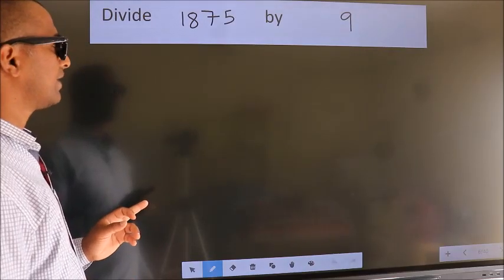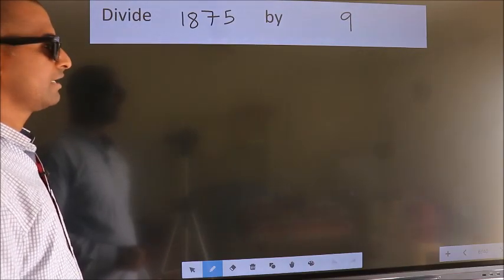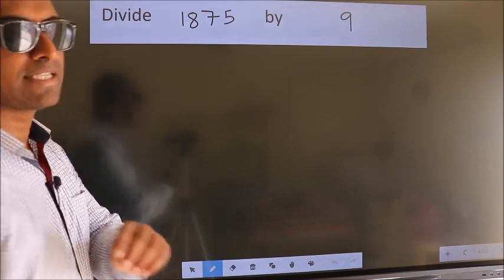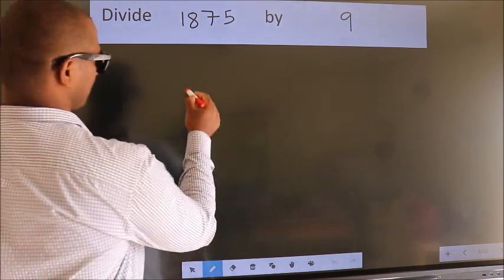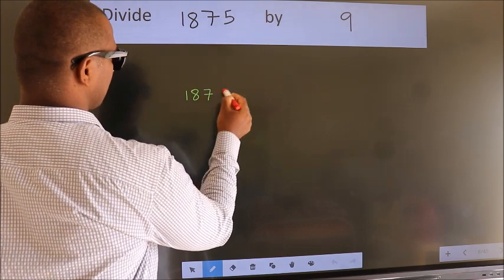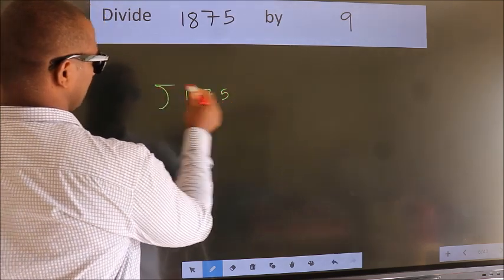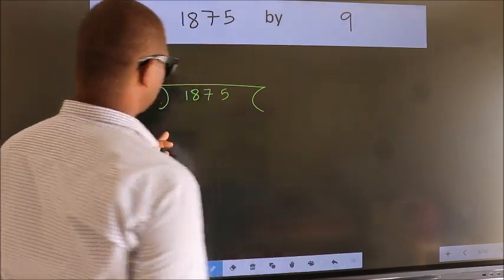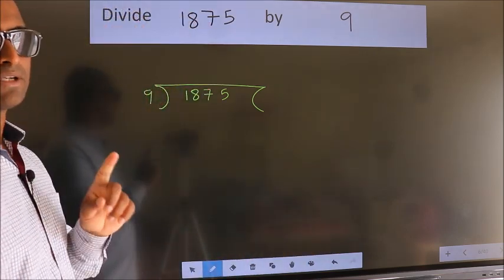Divide 1875 by 9. To do this division, we should frame it in this way. 1875 here, 9 here. This is your step 1.